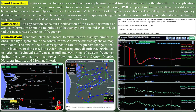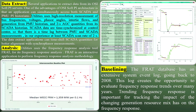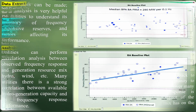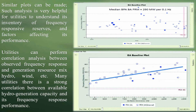Notification: the application sends out a notification of the event occurrence as well as information about the magnitude of frequency deviation and the PMU which had the fastest rate of change of frequency. Visualization: technical staff has access to visualization displays similar to those used by dispatchers in the control room. An overview display shows a map with zoom. The size of the dot corresponds to the rate of frequency change at that PMU location. In this case, it is evident that a frequency disturbance originated in Arizona. Technical staff can also pull up 90-second plots of system frequency during the event, as well as power flows on the California-Oregon Intertie, Northern Intertie, and Montana Intertie.